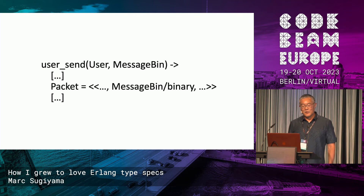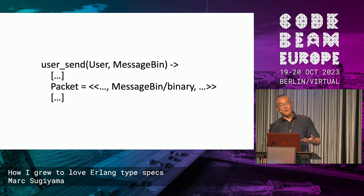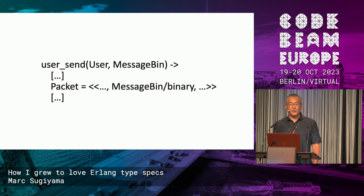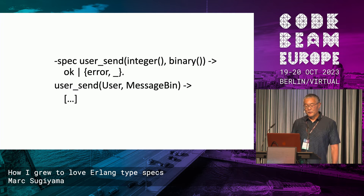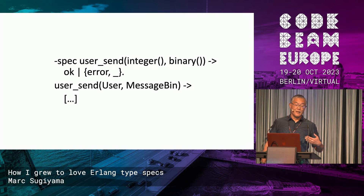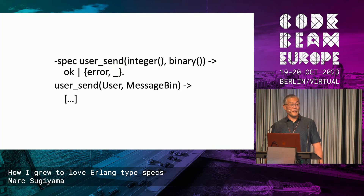We can basically reverse engineer that function and discover that the message argument is used as a binary, so it has to be a binary. We can give ourselves a hint by renaming the argument to say this is a binary. We could do the same thing with user and slowly discover, maybe through functions it calls, that it's in fact a user ID and maybe it's an integer. We can go a little further than just renaming the argument by providing a type spec for that function. We can say the first argument is an integer, the second argument is a binary, and we also get the benefit of understanding what it's returning — maybe it returns OK and an error tuple.